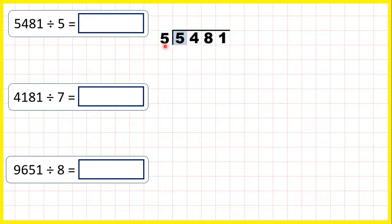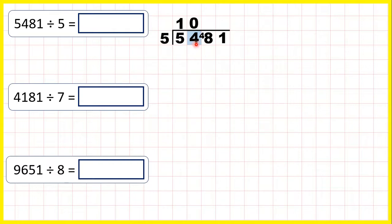5 divided by 5 is 1, because 1 times 5 is 5. Now 4 divided by 5 is 0, remainder 4. That's because 0 times 5 is 0, and then we need 4 more to get to 4.